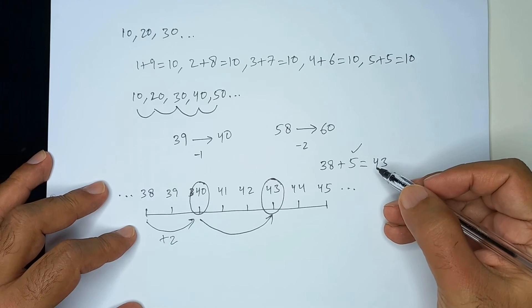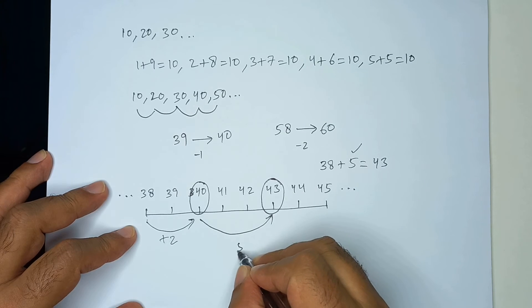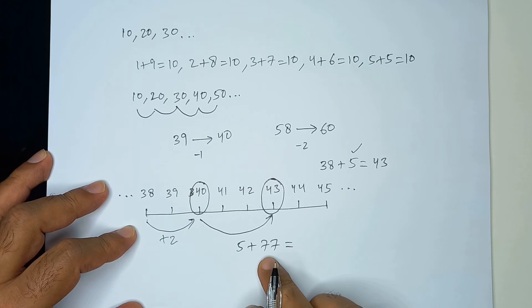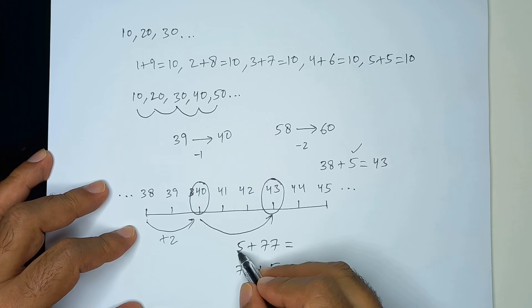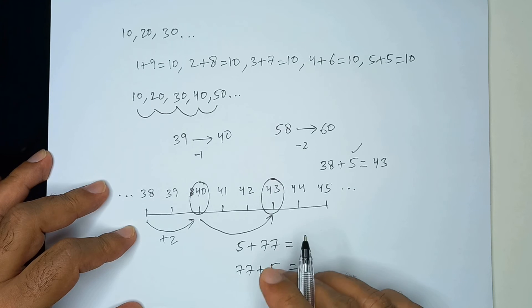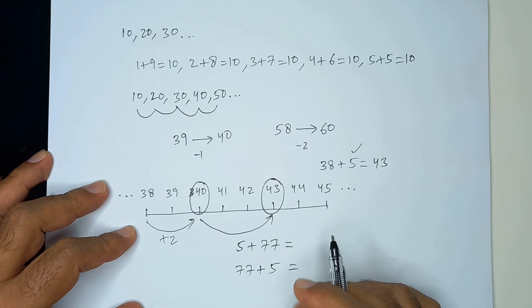You notice also that if we wanted, say let's say we want 5 plus 77. Now, the answer to 5 plus 77 will be same as 77 plus 5. So, instead of adding 77 to 5, we can add 5 to 77 because the order of the numbers in addition, the order does not matter. We can always reverse the order if we want to.